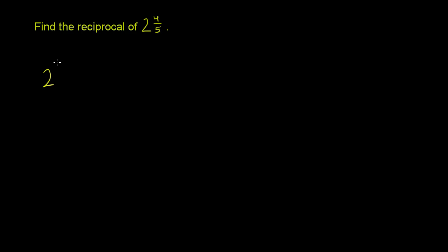So 2 and 4 over 5. If we write it as an improper fraction, it's still going to be over 5, but the numerator is now going to be 5 times 2 plus 4.